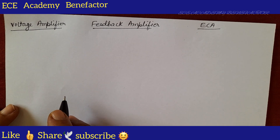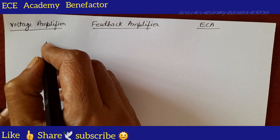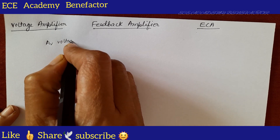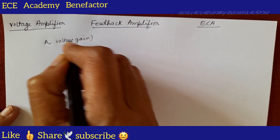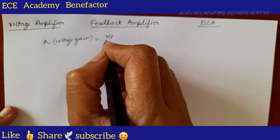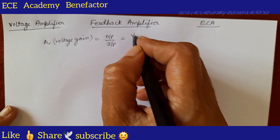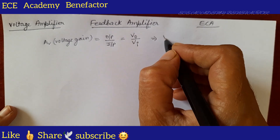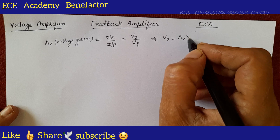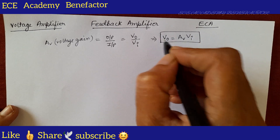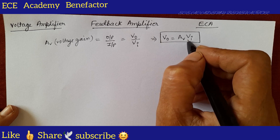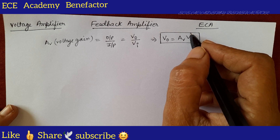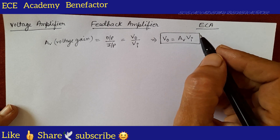To draw the equivalent circuit of a voltage amplifier, we know the voltage gain equation. Av is known as voltage gain. It is equal to output by input — that is output voltage divided by input voltage.